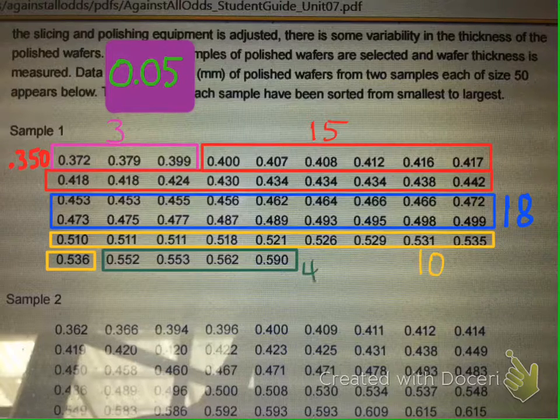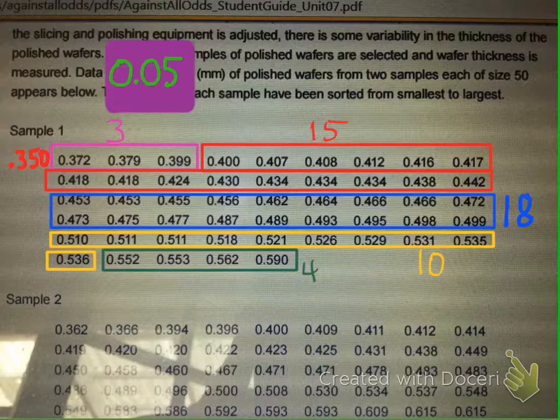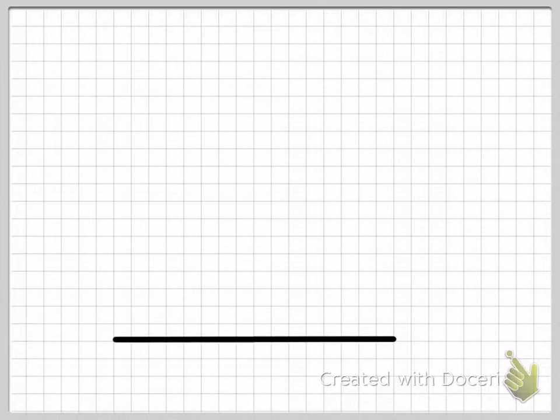Now we are ready to set up our histogram. I'm going to use a piece of graph paper. My horizontal axis, I've decided to let three boxes of the graph paper represent the width of one interval or one data class. So I'll mark off the axis there. Our lowest number once again is 0.350, and so going up by intervals or increments of 0.05 means the next one starts at 0.4, the next one is at 0.45, and so on.